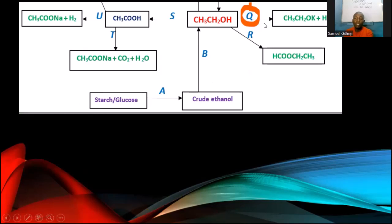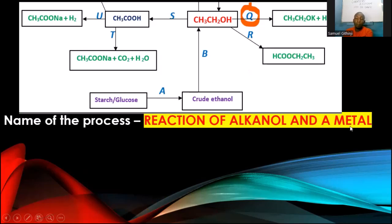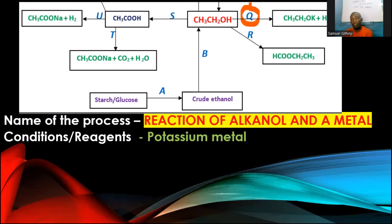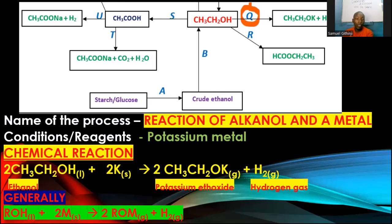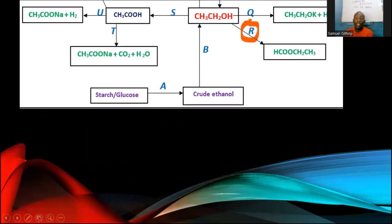Process Q — ethanol reacting with a metal (specifically potassium) to give a compound containing potassium and hydrogen gas — is the general reaction of an alkanol with a reactive metal. This applies to very reactive metals: potassium, sodium, lithium, magnesium, calcium. The product is a metal alkoxide (e.g., potassium ethoxide from ethanol, potassium methoxide from methanol) and hydrogen gas.